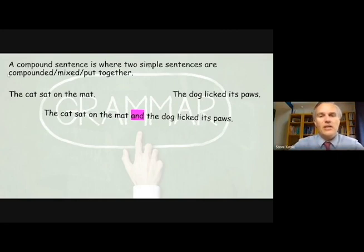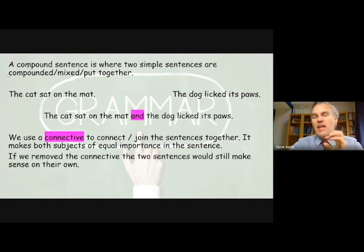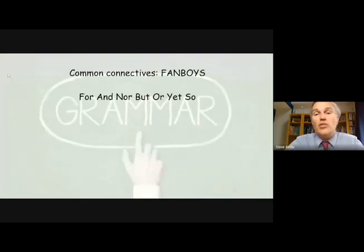Now if we were to look at this sentence here, both subjects have got equal importance in the sentence. And if we remove that connective, the two sentences which are at the top there, the cat sat on the mat and the dog licked its paws, both make sense on their own. Now some common connectors we can usually remember through the mnemonic FANBOYS: for, and, nor, but, or, yet, so. However, that's not an exhaustive list. This is a very basic, very common connectors that we can use.